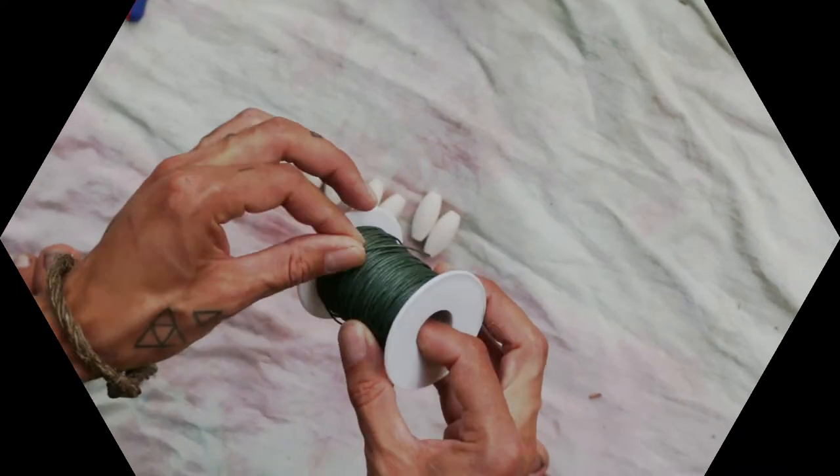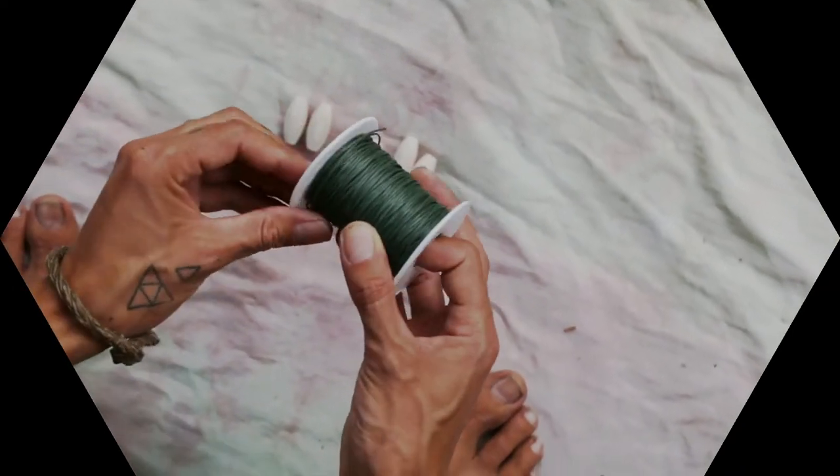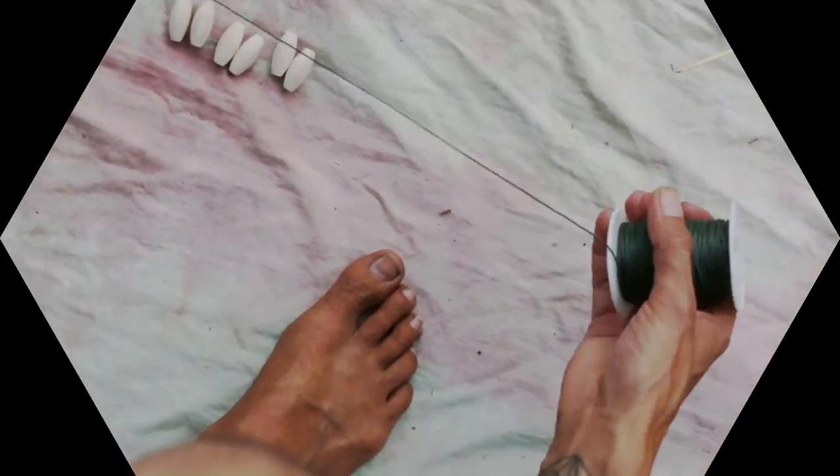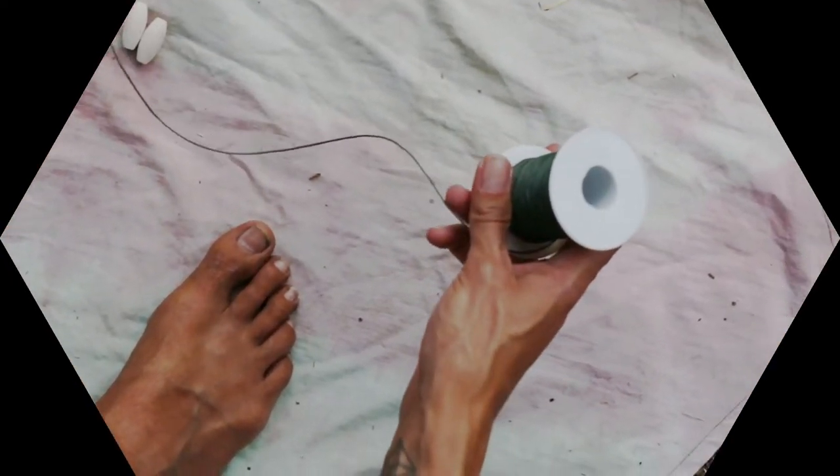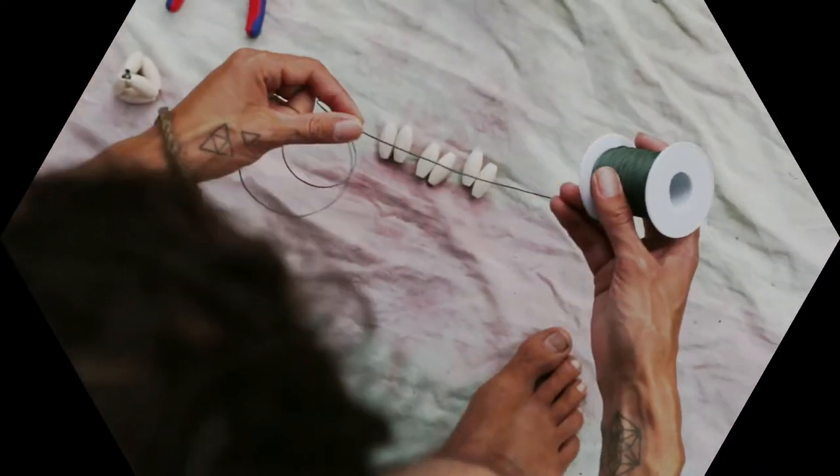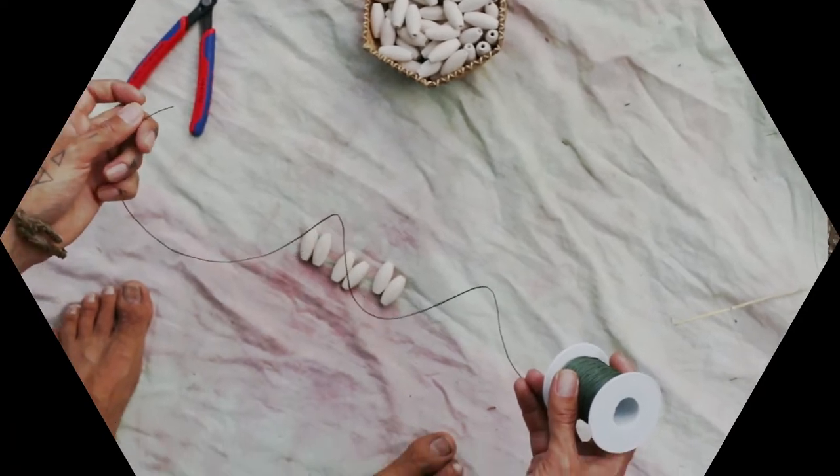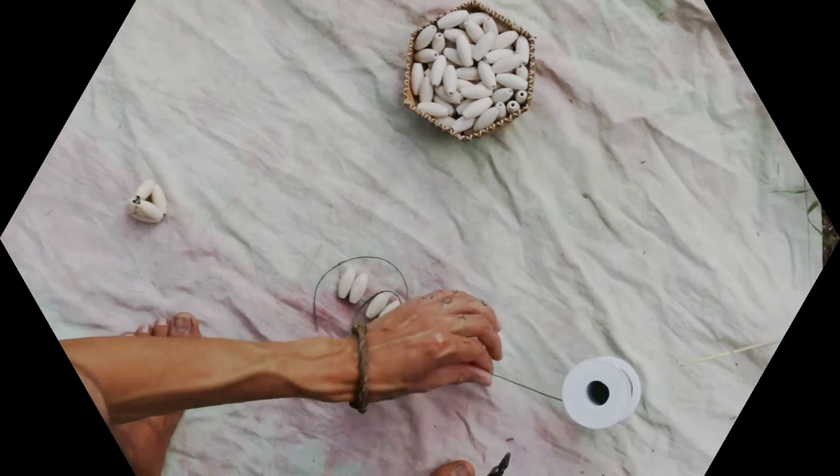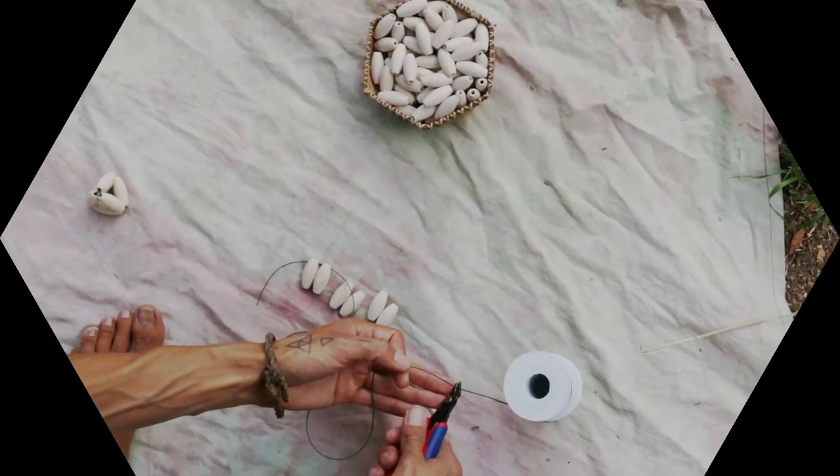And a piece of string. I'm using these beads on this string because they fit very well together, but whatever you get can work for this. This is always a process of finding things that fit together well. This is a cotton string that is woven, and I'm just going to take a piece of that.